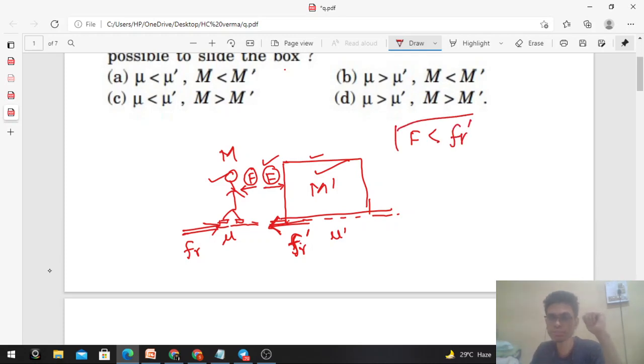This is the condition for block not to slip. In addition to this, one more condition: F should be greater than F_r. This is the condition for the man to slide and box not to slide.